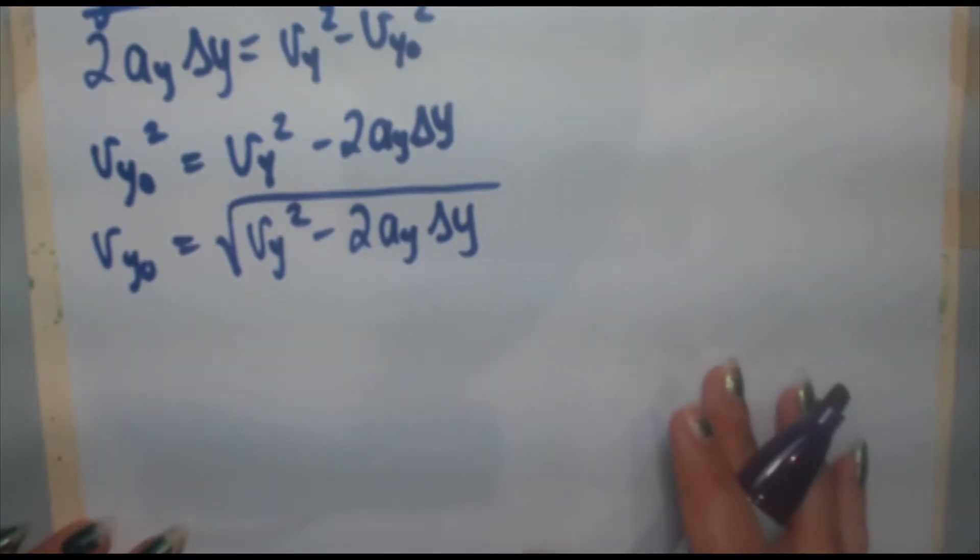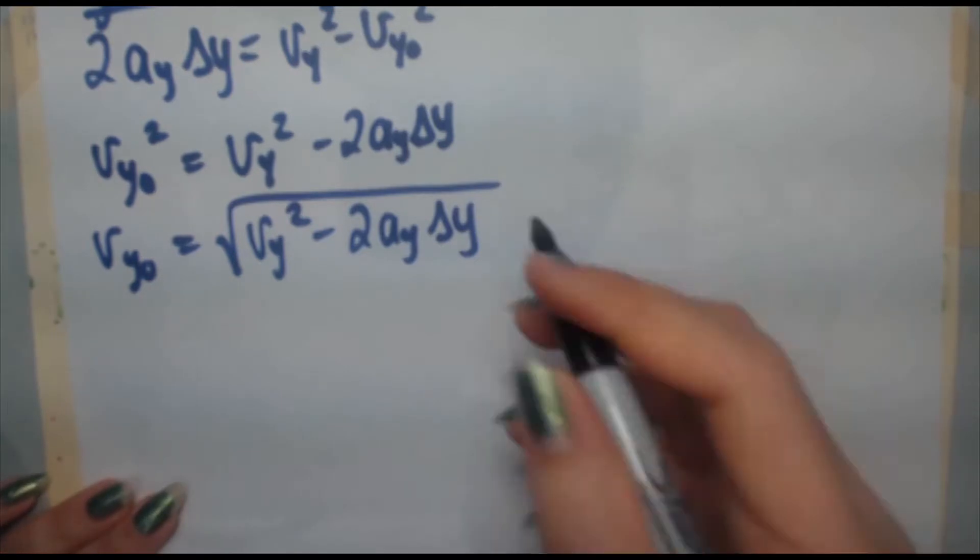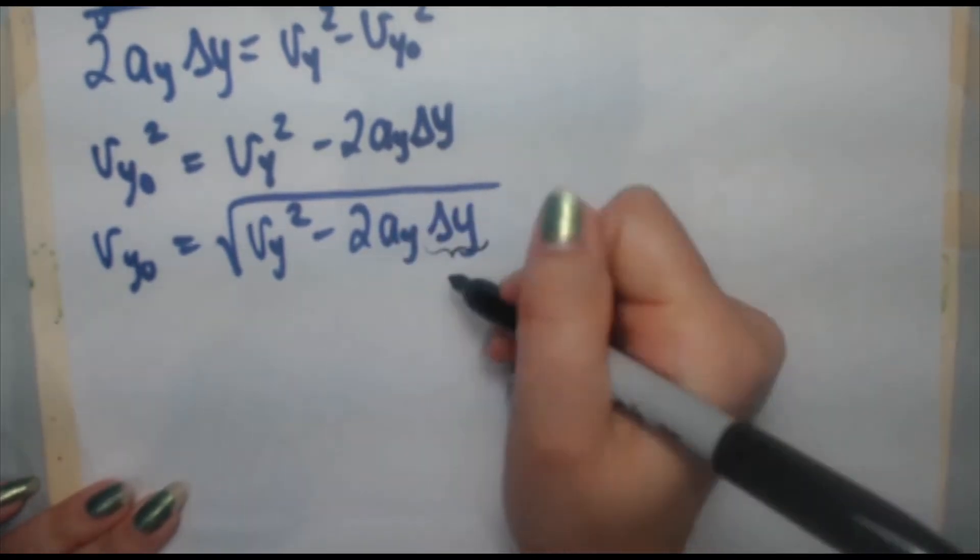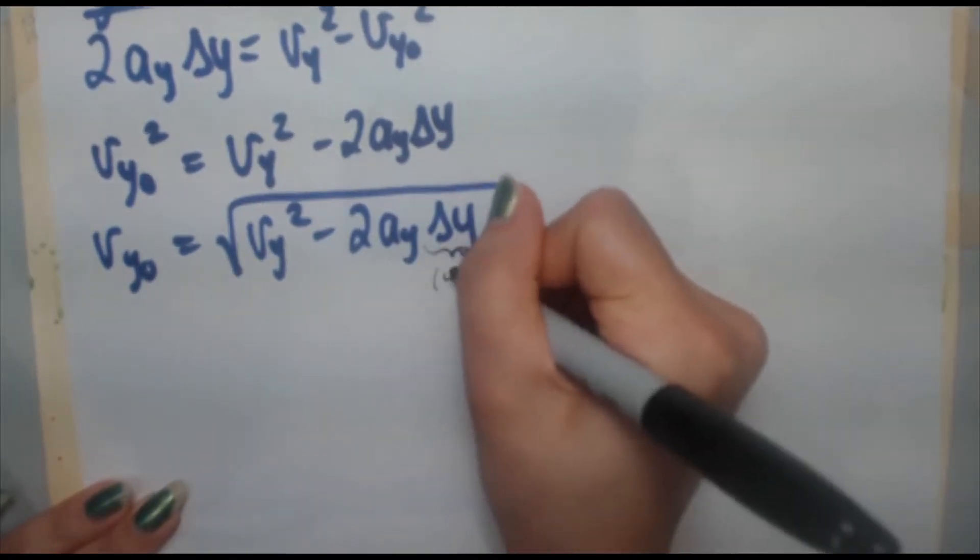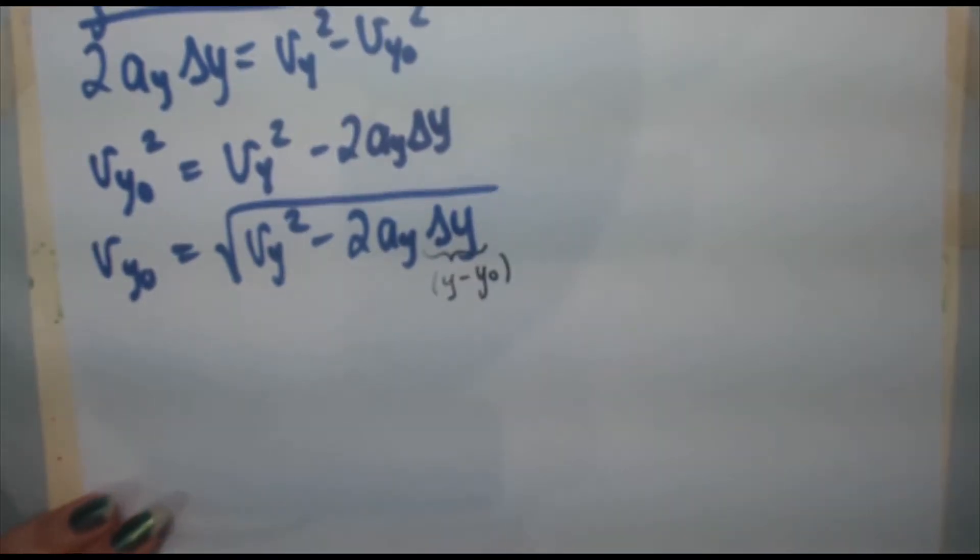Now we've simplified it. This Δy is a change, right? So this is actually y final, which is just y minus y initial, which is y₀.